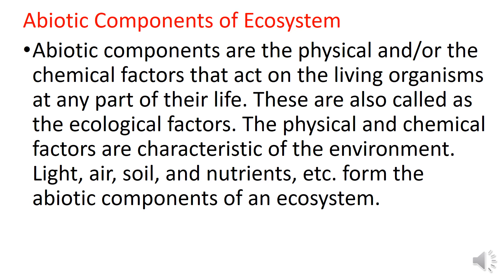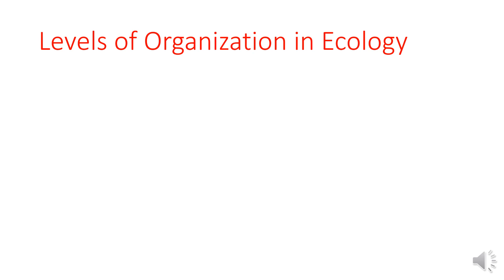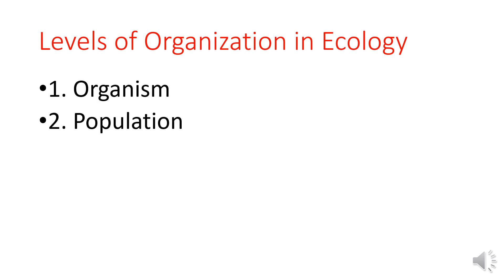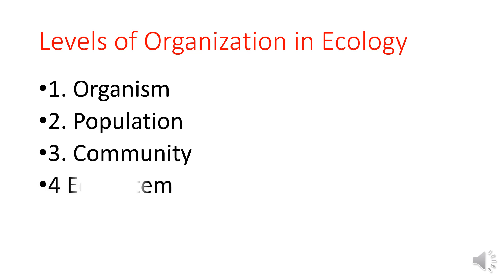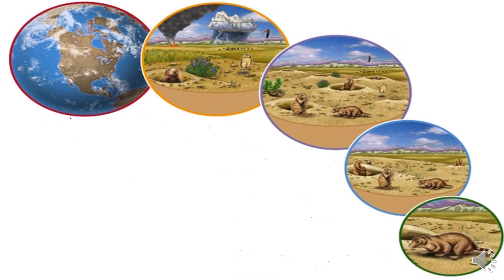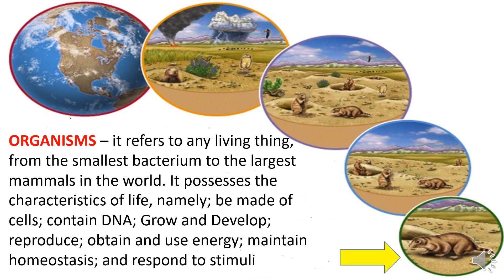The levels of organization in ecology are: organisms, population, community, ecosystem, and biosphere. Starting with organisms: an organism refers to any living thing, from the smallest bacterium to the largest mammal in the world. It possesses the characteristics of life — being made up of cells, containing DNA, growing and developing, reproducing, obtaining and using energy, maintaining homeostasis, and responding to stimuli.